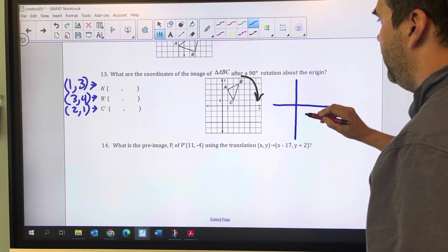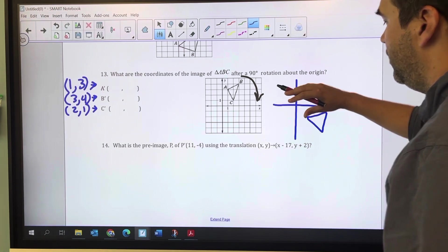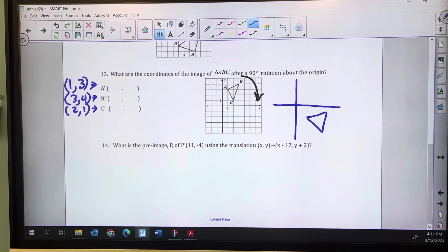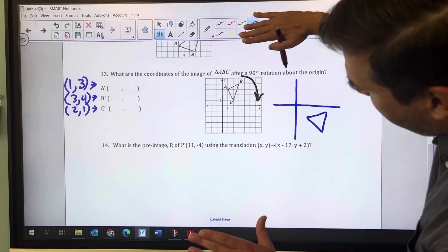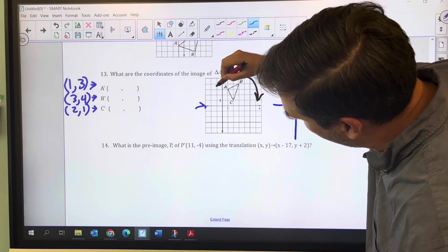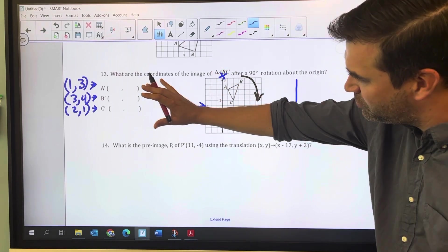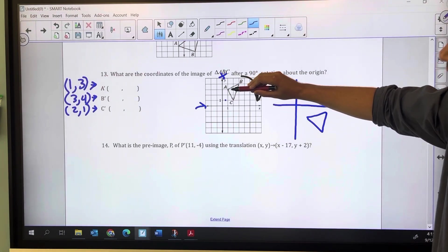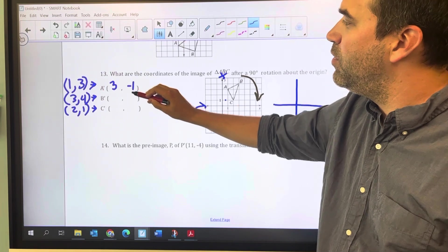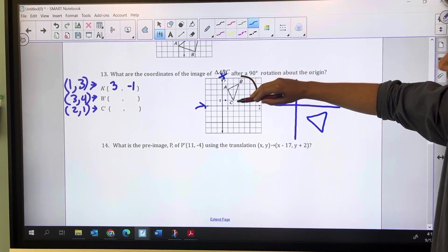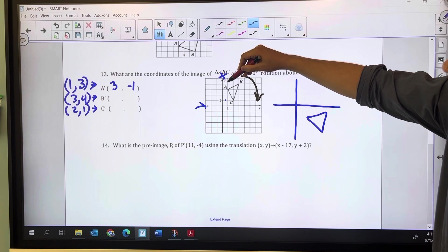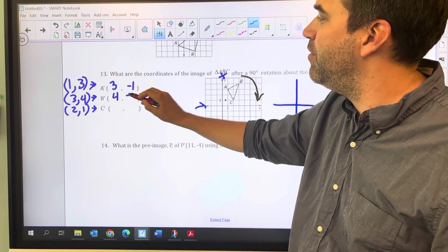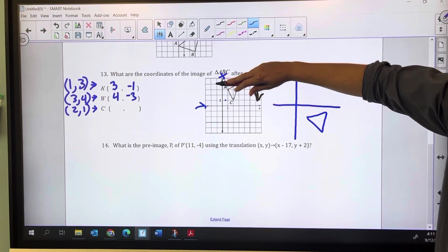I actually end up with that triangle down there in the fourth quadrant. So I picture it being like this: this is the y, this is the x, those are positives, these are negatives. From this perspective, A moves to (3,-1), B moves to (4,-3), and C is (1,-2).